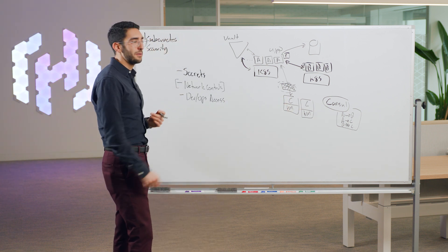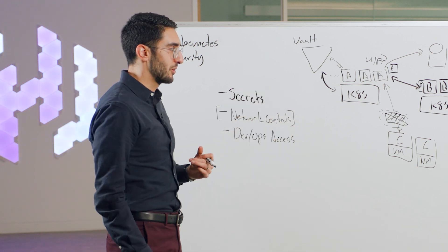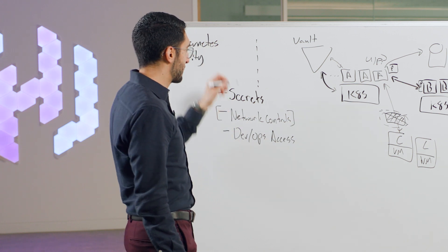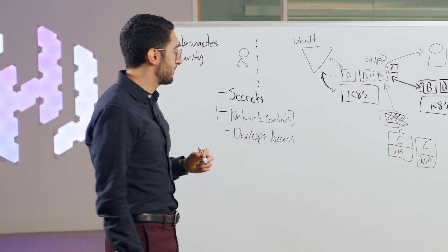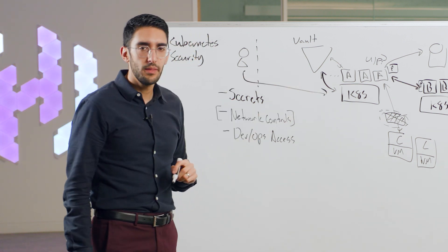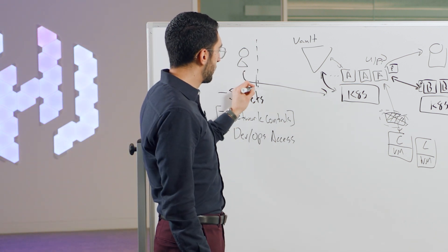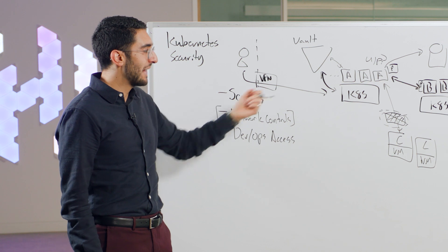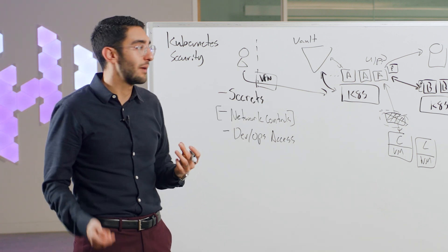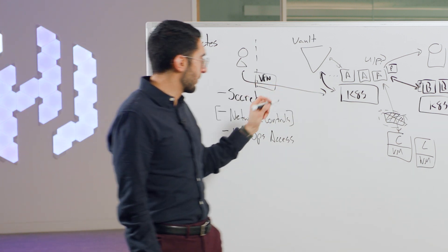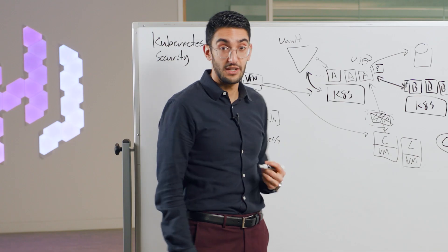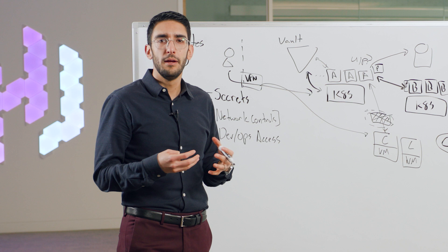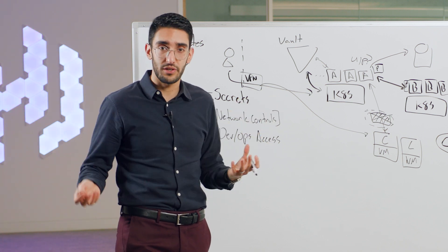The third problem is human user access. Developers and operators need to get into Kubernetes clusters to debug things, deploy applications, and manage environments. Often developers are not on the production network — they might be at home or on the corporate network. The most common approach is letting everyone VPN onto the network or SSH through a bastion host. The challenge is that you end up giving people far more access than they need — a developer who only needs access to one Kubernetes cluster can end up talking to services they shouldn't once they're on the full network.